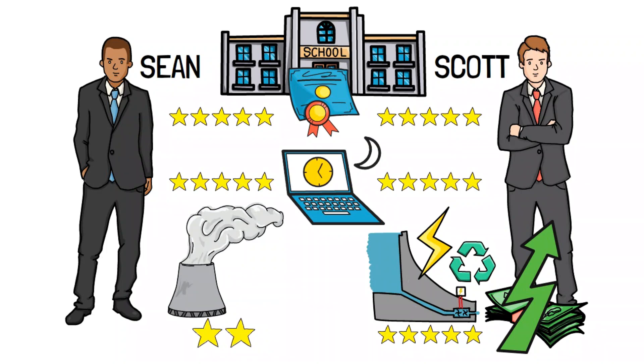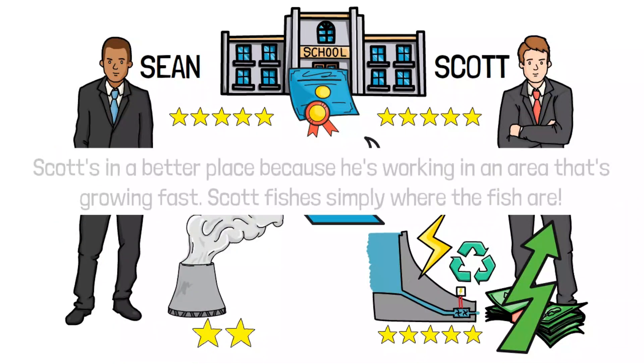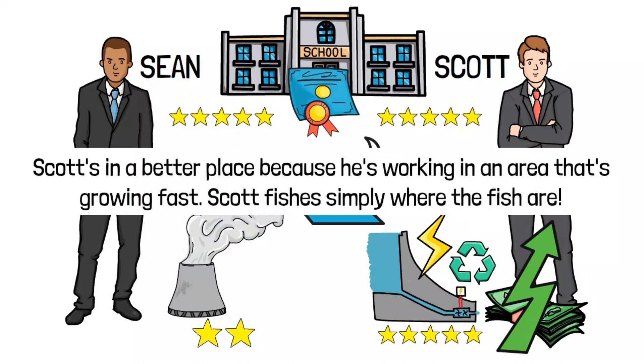According to what Munger says, Scott would have a better chance of doing well because he's working in a place where there's a lot of opportunity. Even though they're both smart, hardworking, and honest, Scott's in a better place because he's working in an area that's growing fast. Scott simply fishes where the fish are.